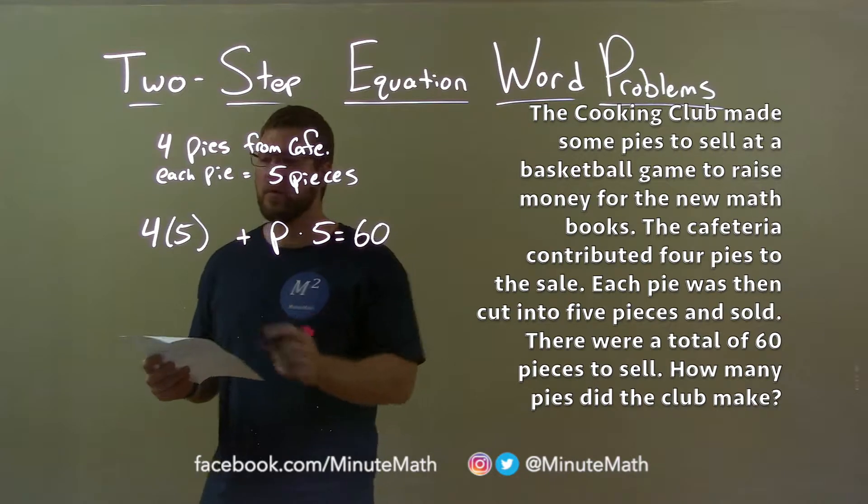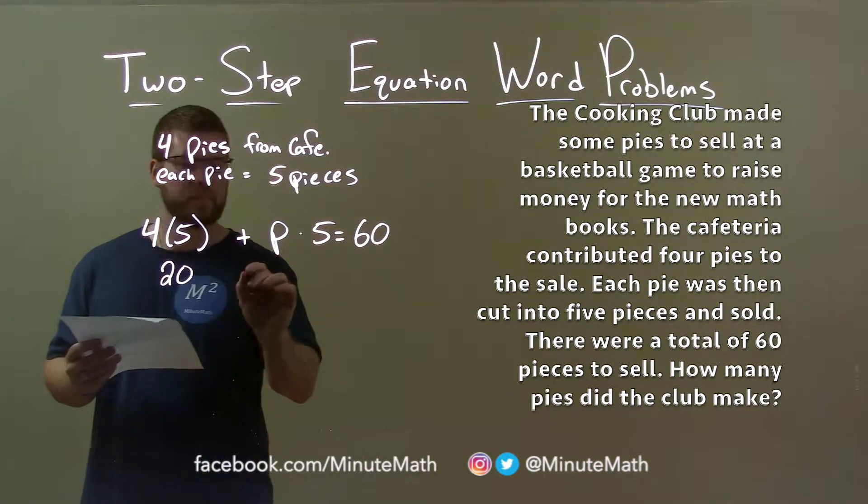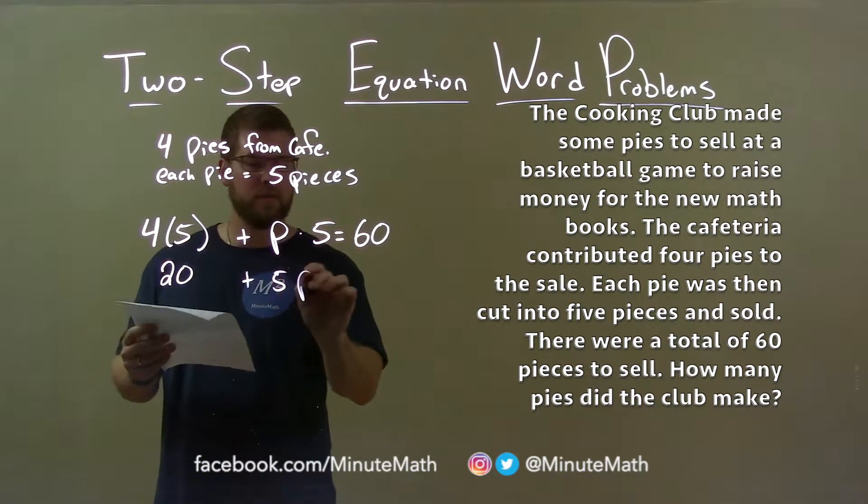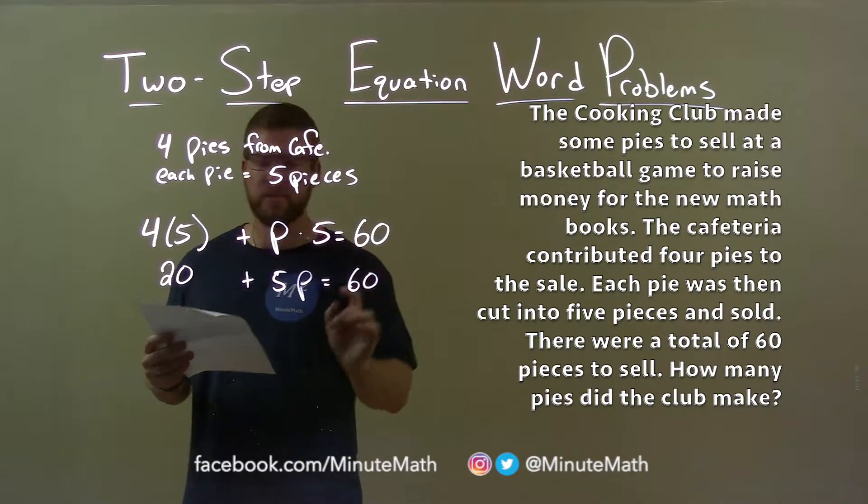Now I want to solve for P. Well, four times five is 20, plus P times five, or you can write it as five P either way, equals 60.